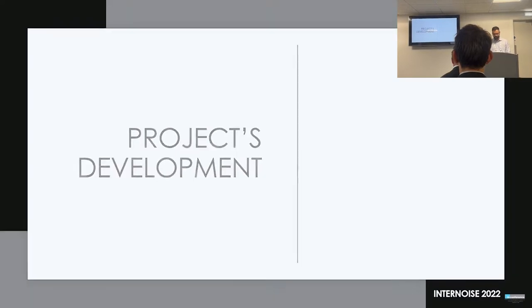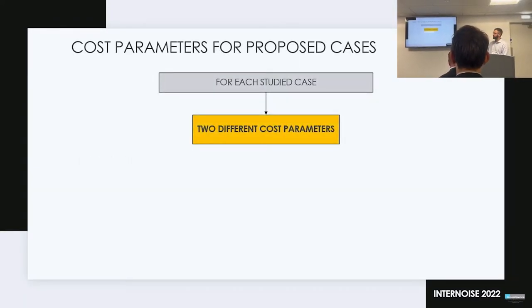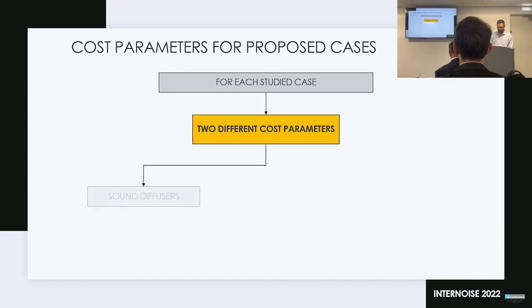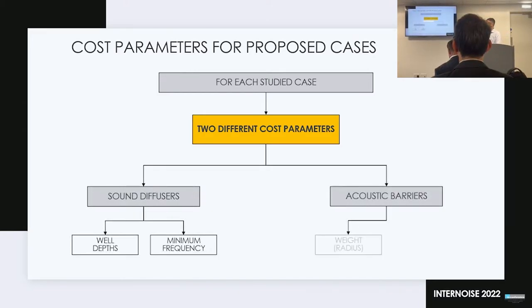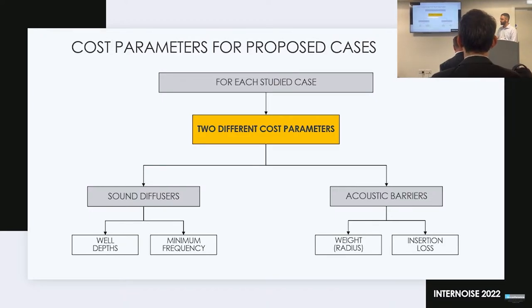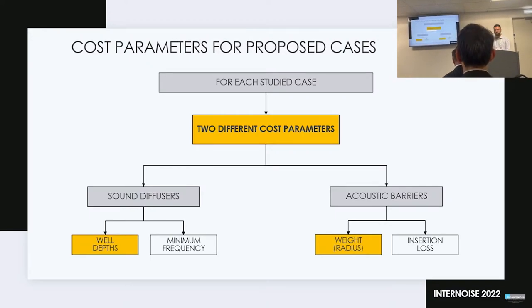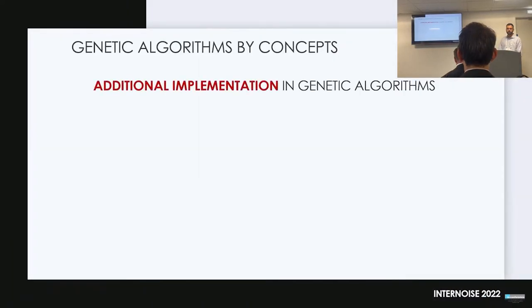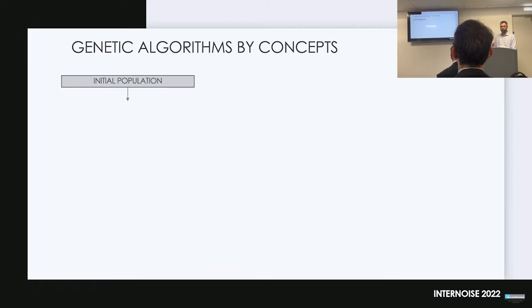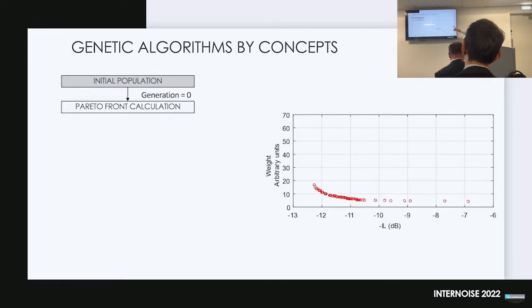For each proposed case, we define cost parameters — the goals that need to be optimized — which also determine the quality of the individuals being analyzed. For sound diffusers, the cost parameters are the depth of the holes and the minimum frequency they can act on. For acoustic barriers, the parameters are their weight based on the radius of the elements, and their insertion loss. In both applications, there is always a parameter defining the physical size of the elements. We also implemented the concept of 'concepts': seeing what happens when new elements are generated by changing the size of a sample using a scale factor.